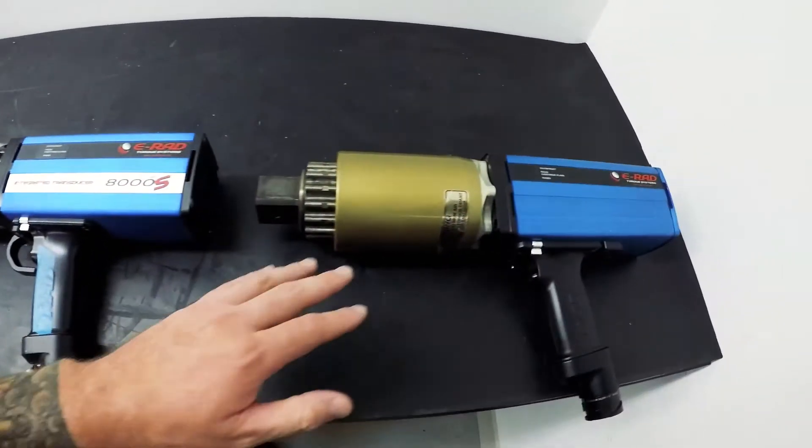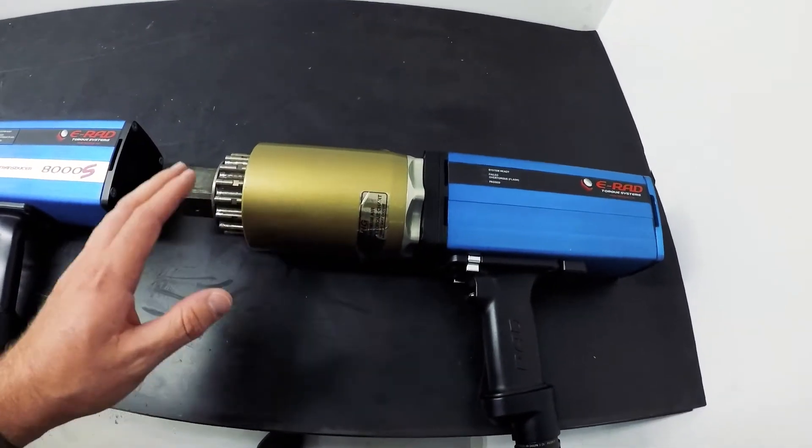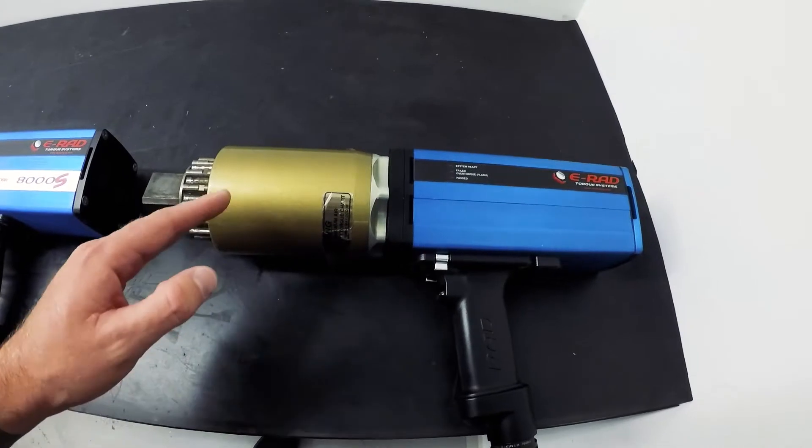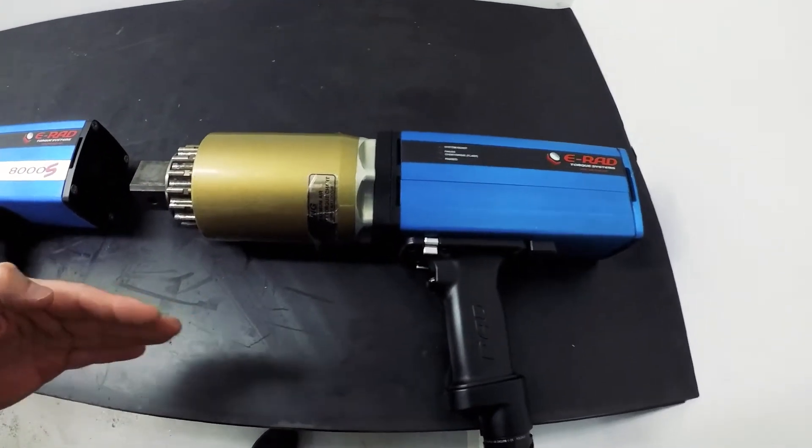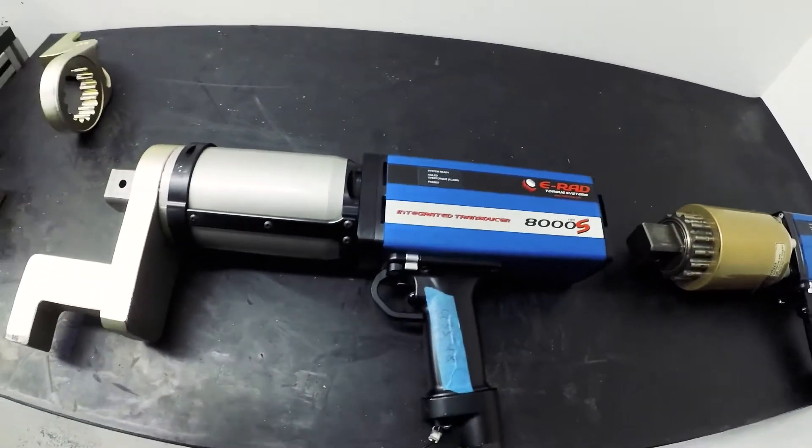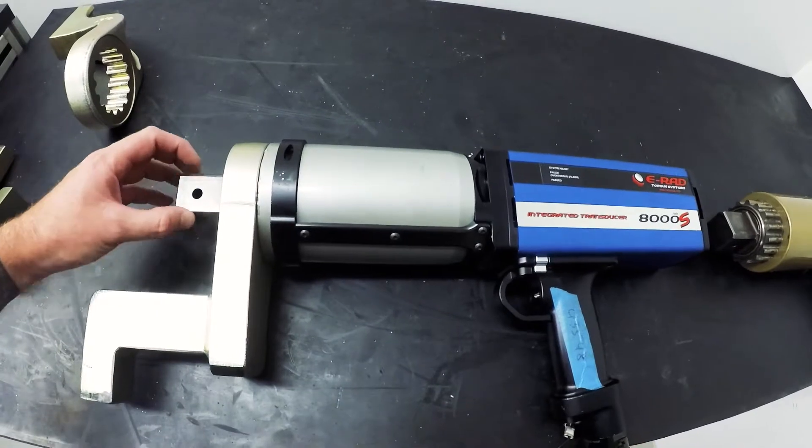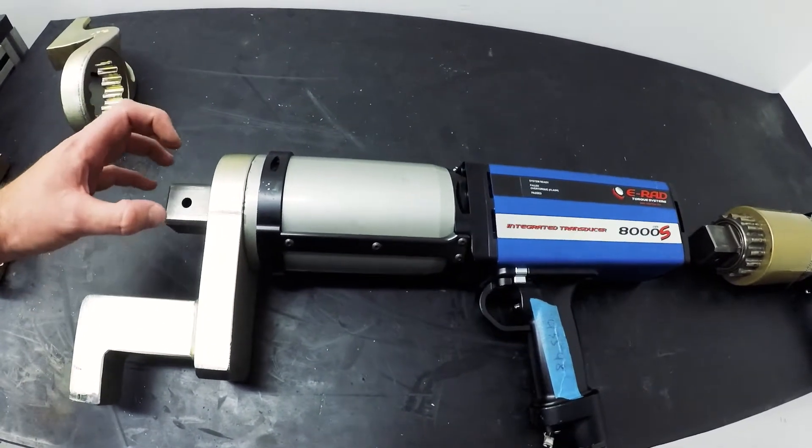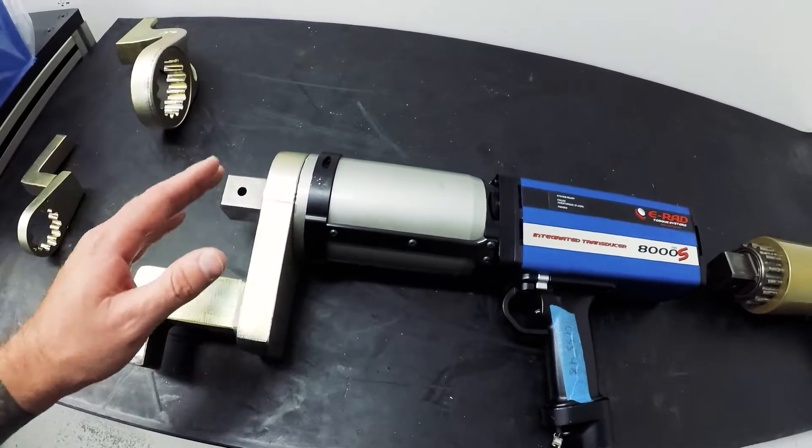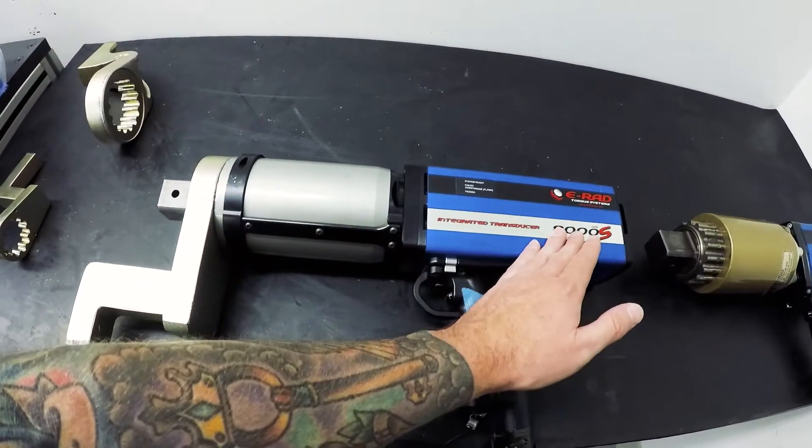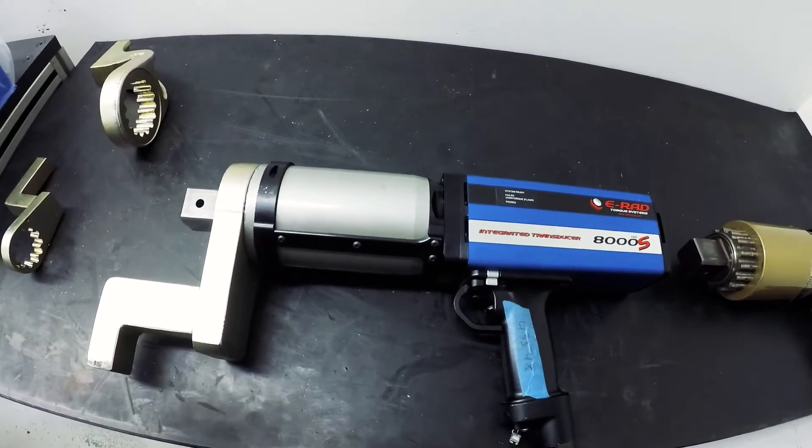So much like this, this product over here that takes the current readings and basically calculates what your torque is, this is working on a little bit different of a system. This is working on actual strain of the bolted connection, so it's a lot more accurate. And it'll tell this tool how it's gotten to that torque value.